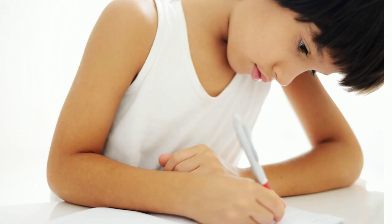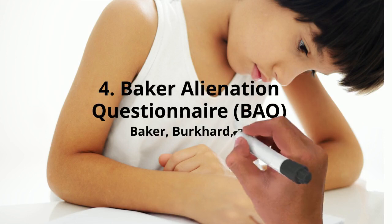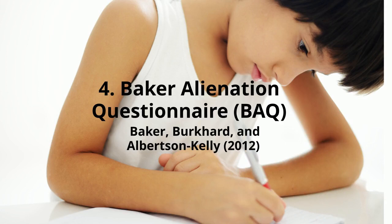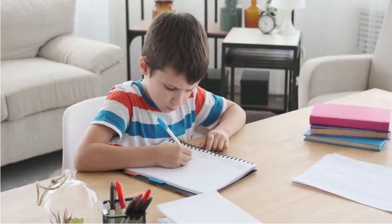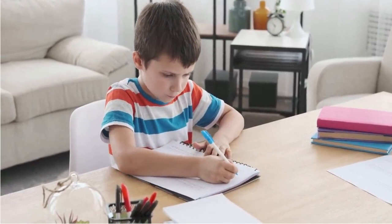Fourth, the Baker alienation questionnaire identifies alienated children using a paper and pencil measure that's short, easy to administer and easy to score objectively. Children who had been court ordered for reunification therapy, specifically for parental alienation, consistently responded in an extremely one-sided all-or-nothing fashion. One parent was denigrated and the other was idealized. The BAQ discriminates well between alienated and non-alienated children.